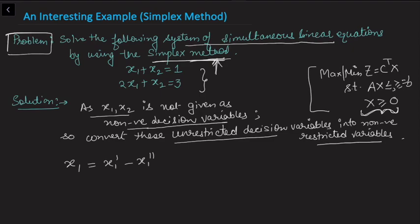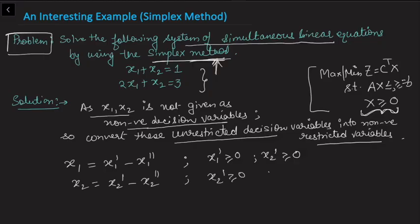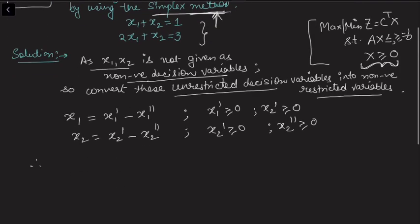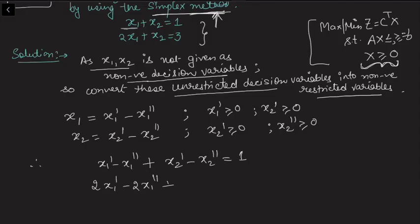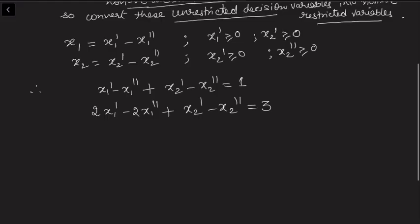Any unrestricted variable can be written as the difference of two new non-negative decision variables. So we write x1 = x1' - x1'' where both x1' and x2'' are non-negative, and similarly x2 = x2' - x2''. Rewriting the first equation: x1' - x1'' + x2' - x2'' = 1, and for the second constraint: 2x1' - 2x1'' + x2' - x2'' = 3.